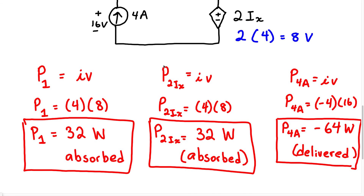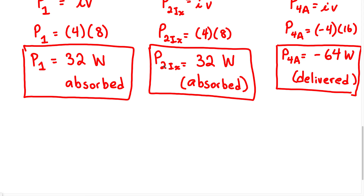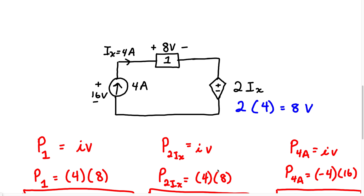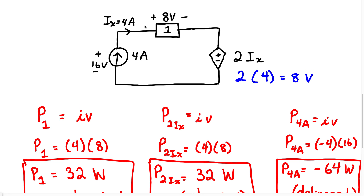To check the answers, the power supplied must equal the power absorbed. Adding all powers: 32 plus 32 plus (negative 64) equals 0 watts — everything checks out. Remember: if the current flows from positive to negative terminal, assume positive current; if it flows from negative to positive terminal, assume negative current.